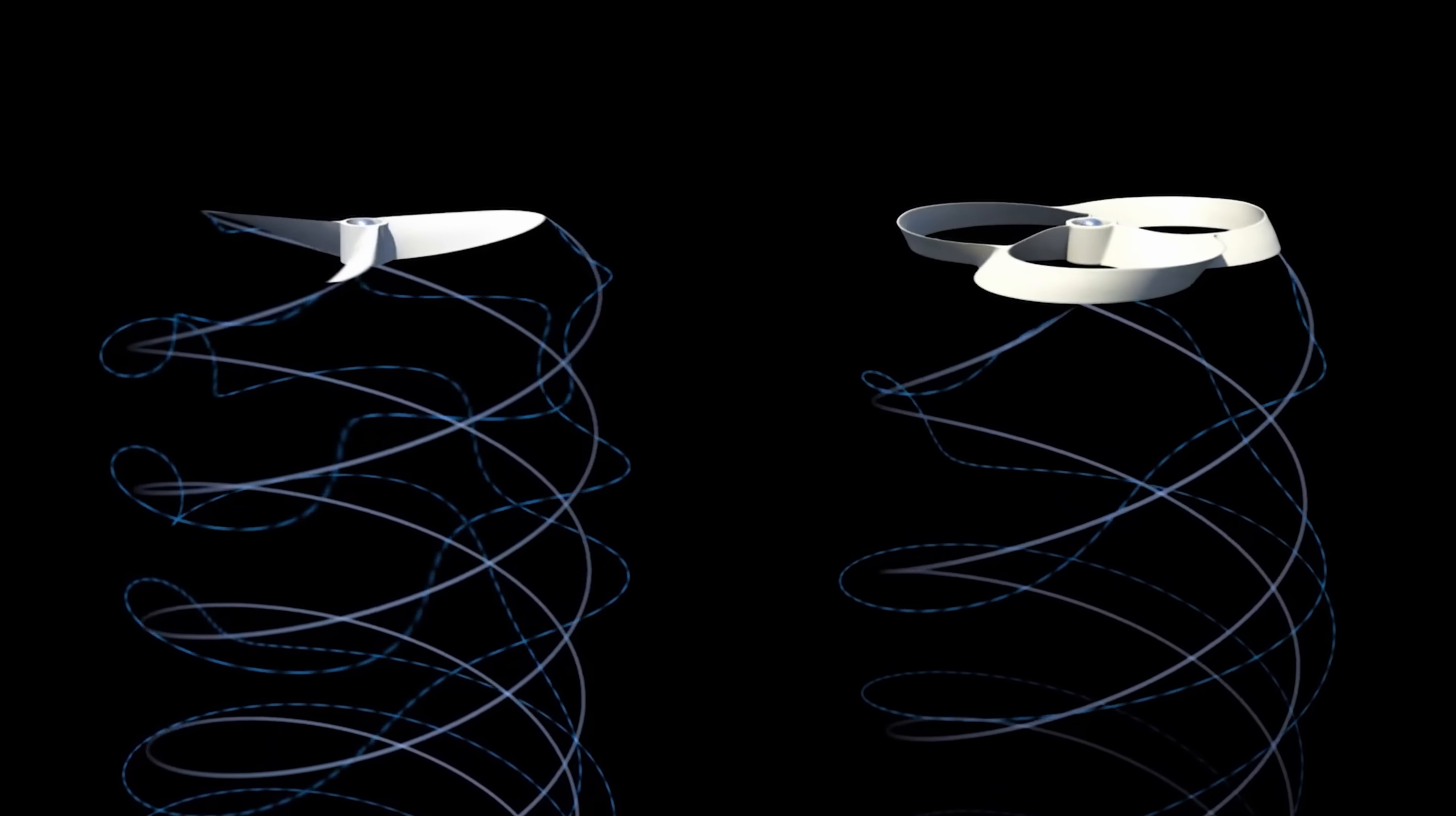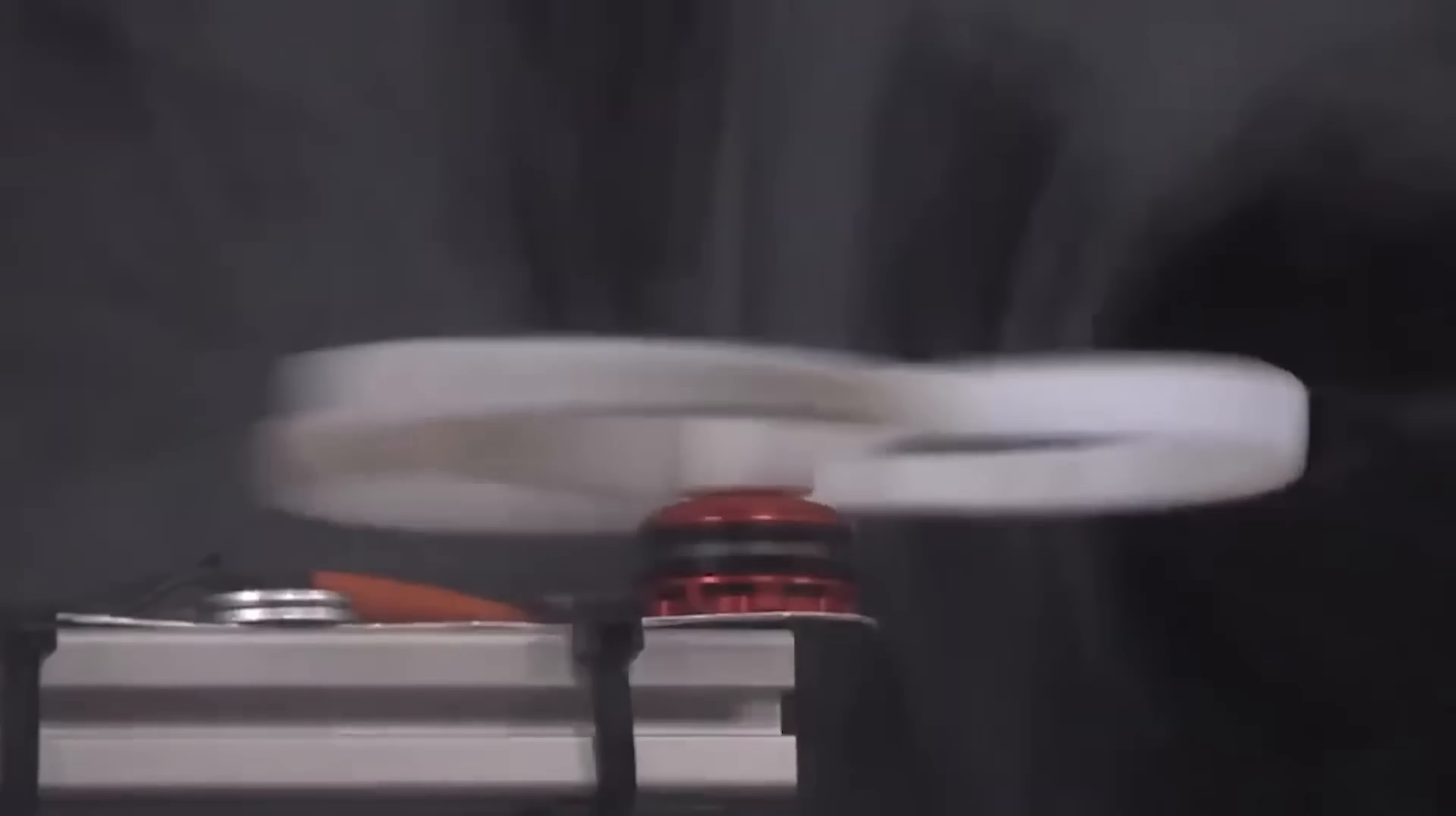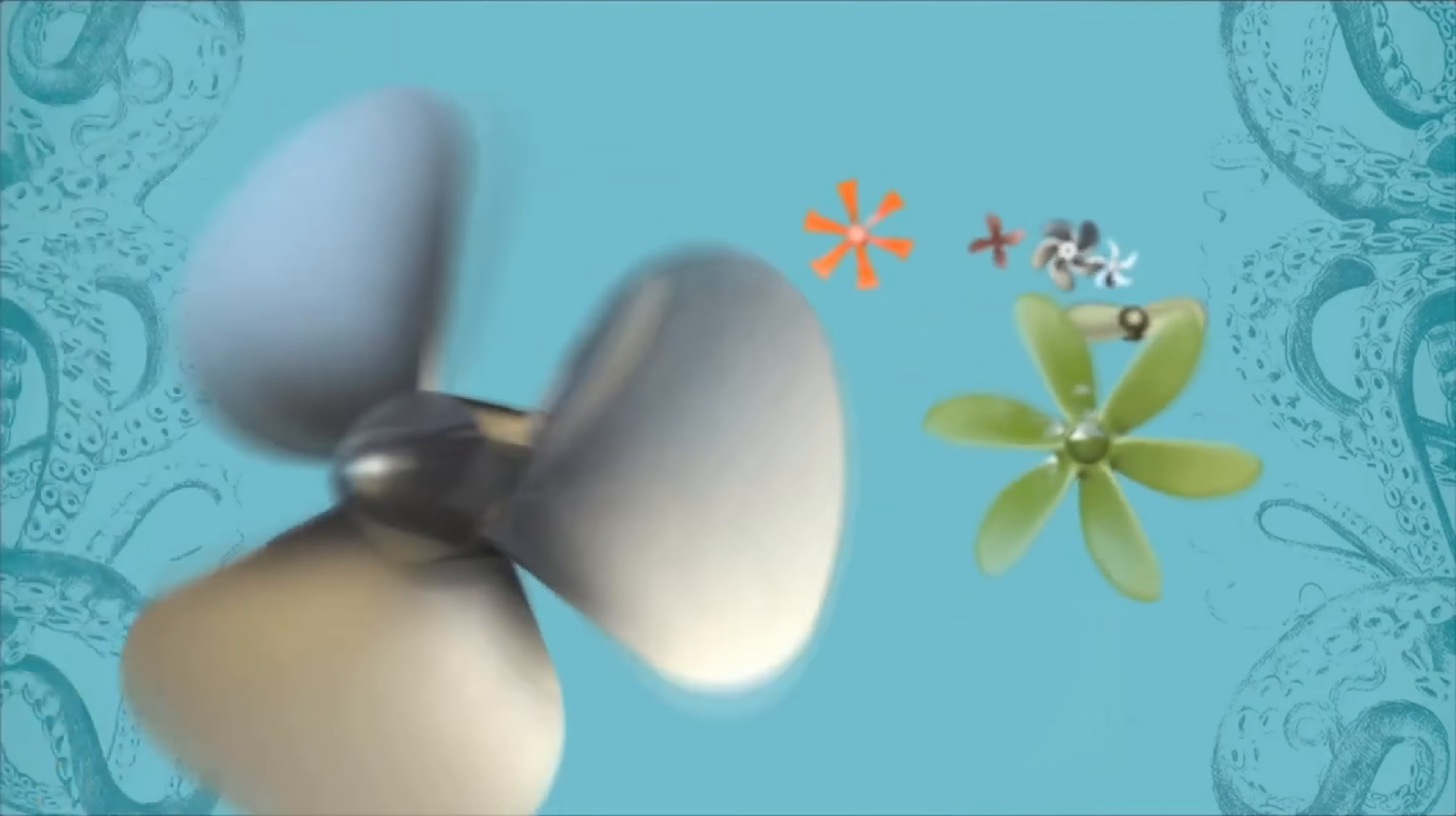A toroidal propeller works by creating a vortex ring, which is a circular flow of air that travels around the propeller blade. This vortex acts as a low-pressure zone that pulls air through the center of the toroid. The slower rotational speed of the toroidal blades means that they produce less noise than conventional propellers, making them a potentially attractive option for aircraft operating in noise-sensitive areas.